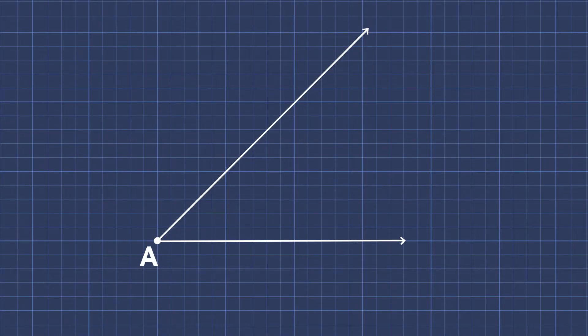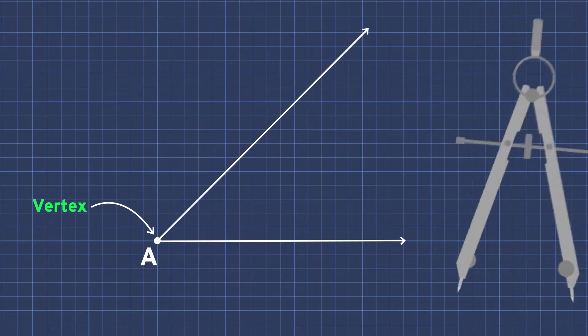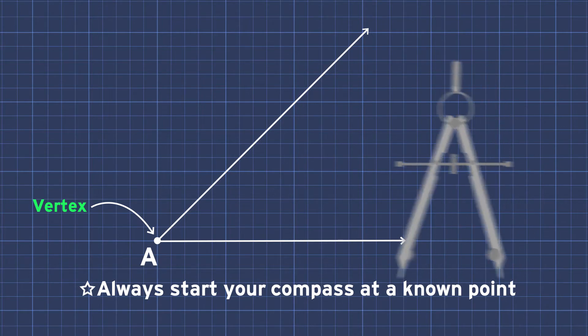Okay, so here's our angle. We'll call it angle A, because A is the vertex. Right, so we've got our compass, and we always have to start our compass at known points. Well, we only got one, so I guess I'll start there.